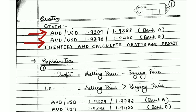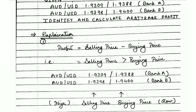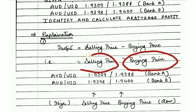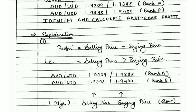The instruction is to identify and calculate the arbitrage profit. Let's understand this in detail first. Whenever you want to make a profit, profit is simply the difference between your buying price and selling price. The thumb rule is that your buying price should be low and your selling price should be high.